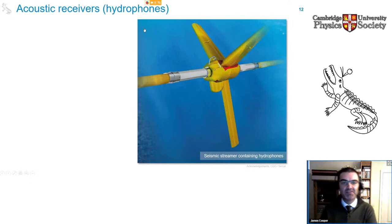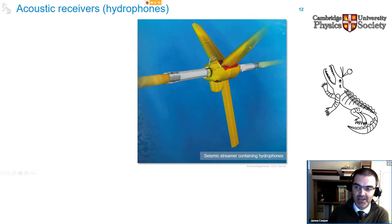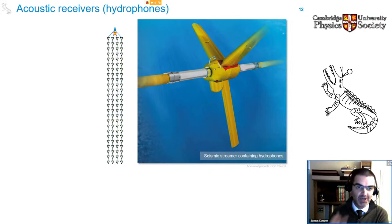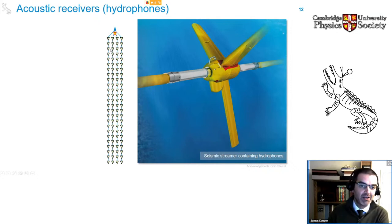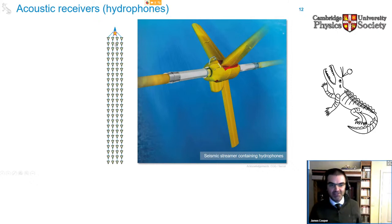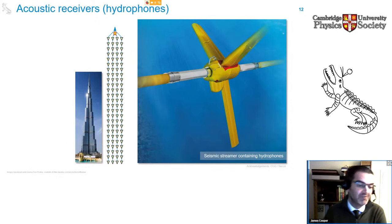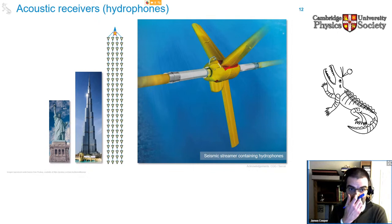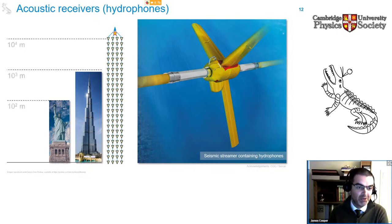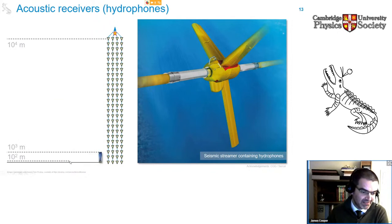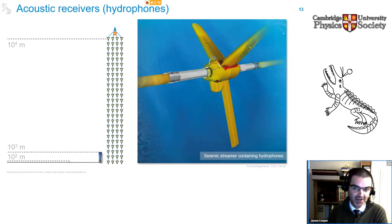The acoustic receivers — the hydrophones — are typically contained in seismic streamers: the yellow cables attached to the back of the boat. A typical bird's-eye schematic of a seismic acquisition vessel has the boat up front, then one or more acoustic sources (the air guns), and behind that an array of hydrophone receivers attached to a series of streamers. To give some idea of scale, this footprint is significantly bigger than the Burj Khalifa or the Statue of Liberty — and this becomes even more impressive when you realise the scale shown is actually logarithmic. On a proper linear scale, you can just about make out the Statue of Liberty in the corner.